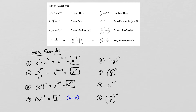For number five, (x times y) quantity to the third is the same as x to the third times y to the third — an example of the power of a product rule. Number six is similar: the power of a quotient. Here's a quotient raised to the second power. The rule says you take the top and raise it to the second power, and take the bottom and raise it to the second power.